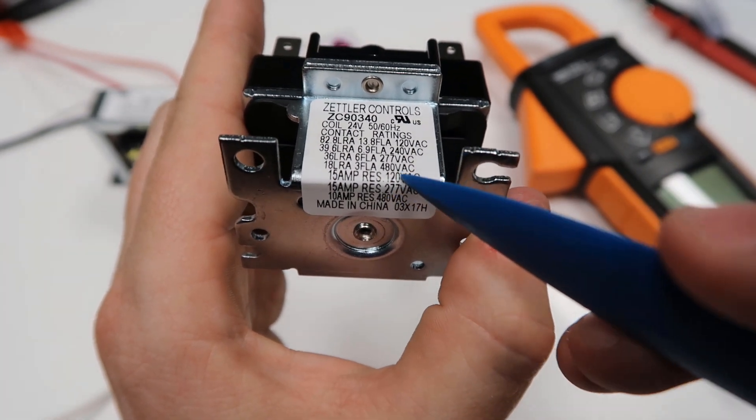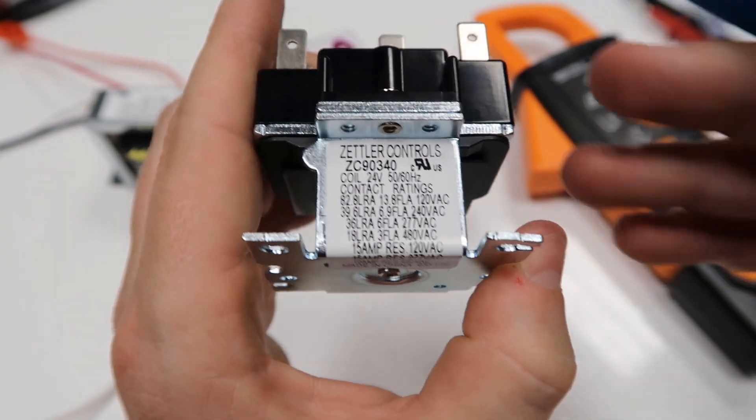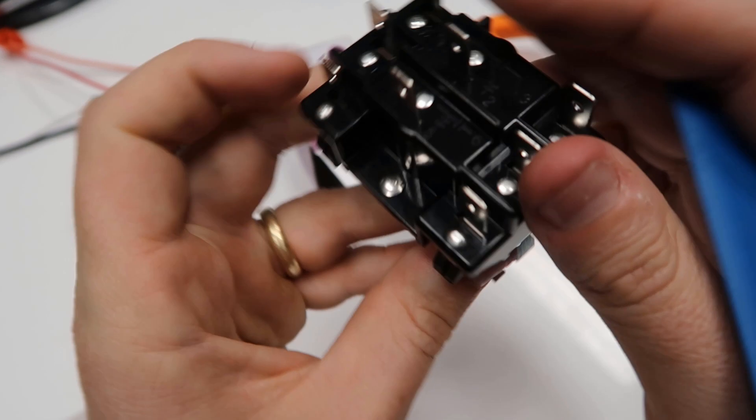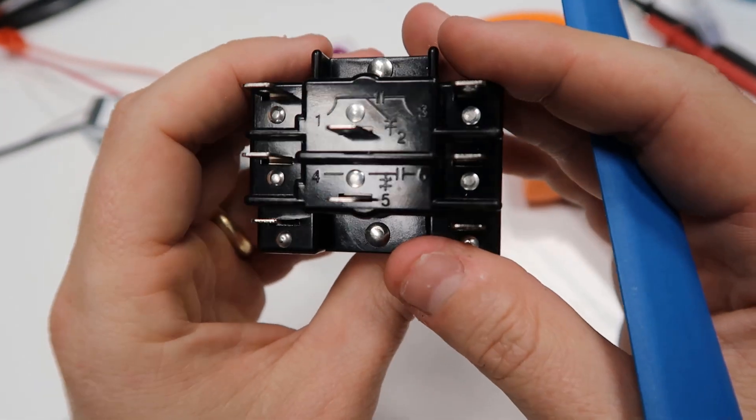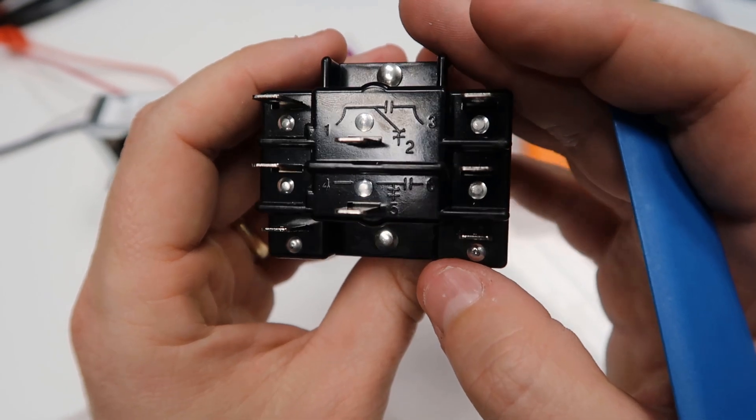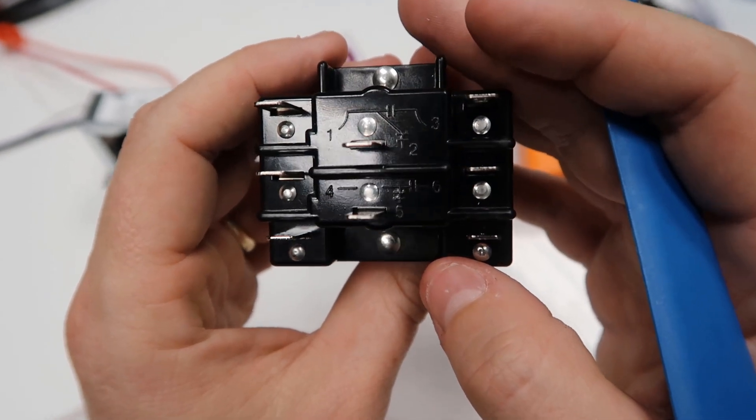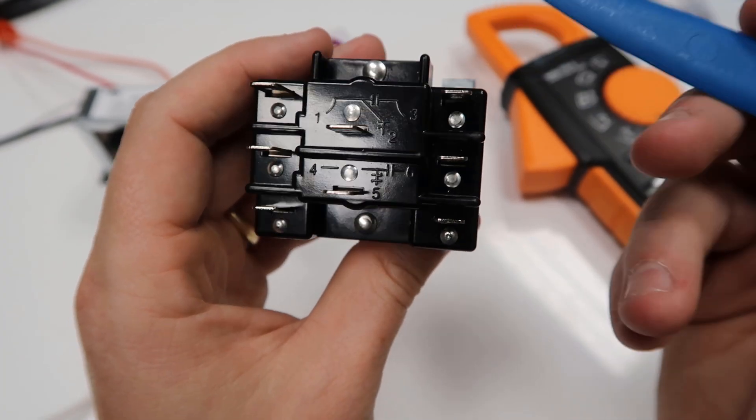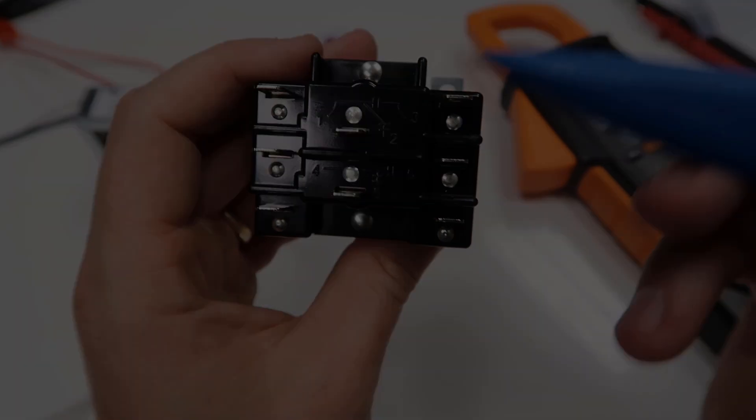That's the ampacity of the actual contact, the contact rating. How much amperage, how many electrons can go through these contacts without the relay failing because of melting or the actual electrons bridging the contact points in the case of high voltage, which is why you see that ampacity go down the higher the voltage goes.